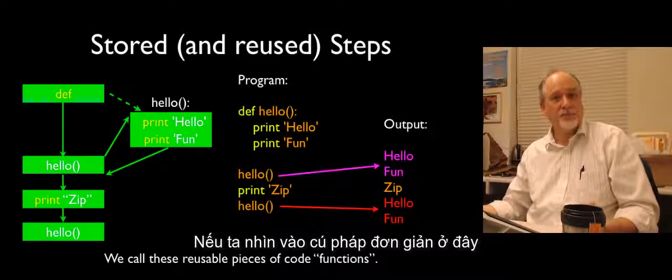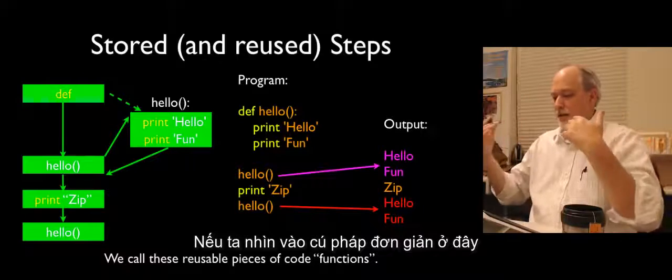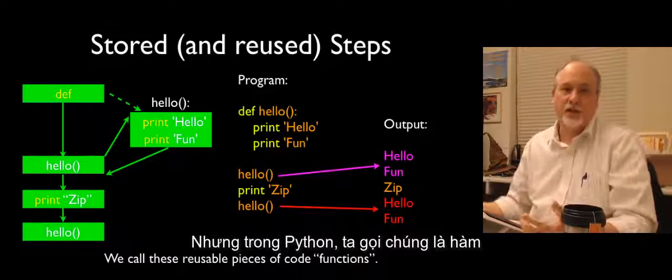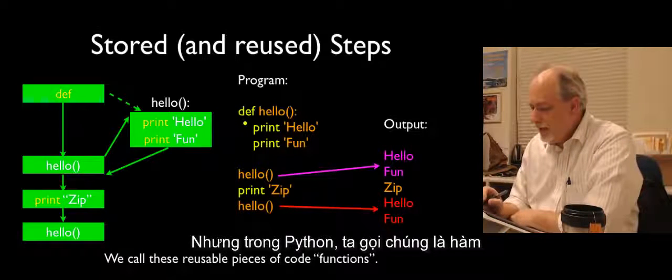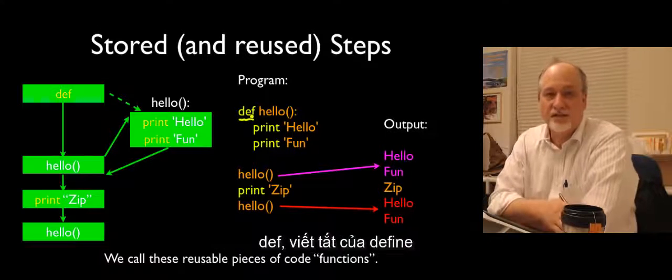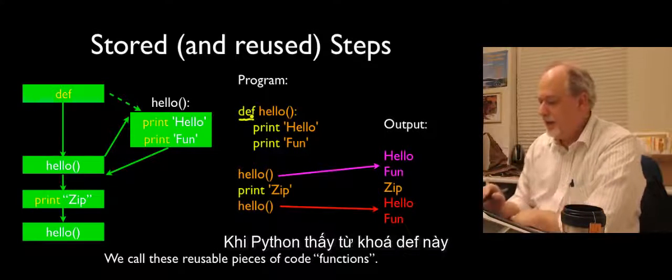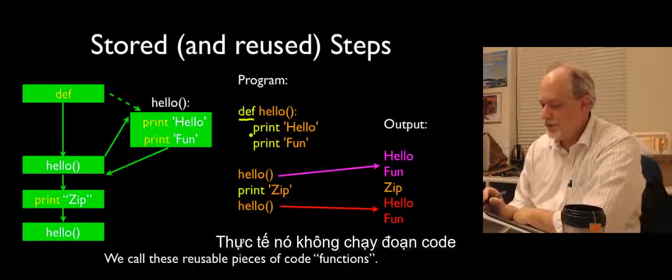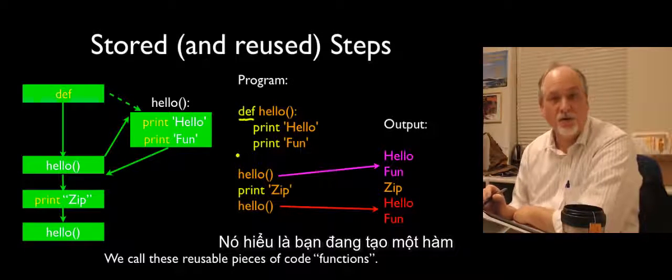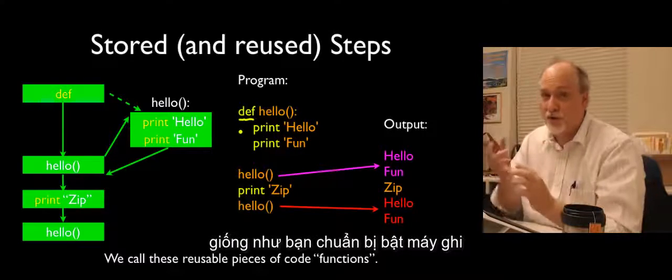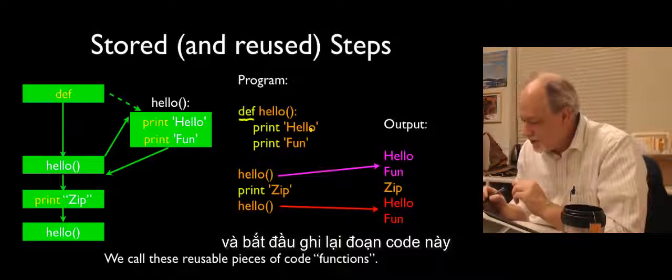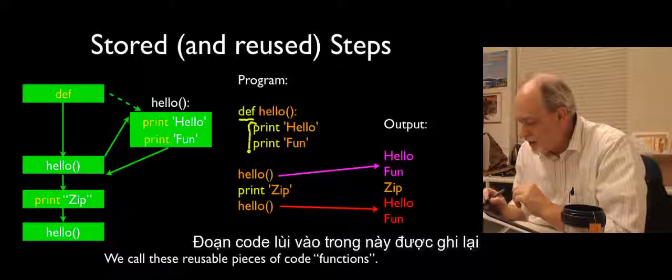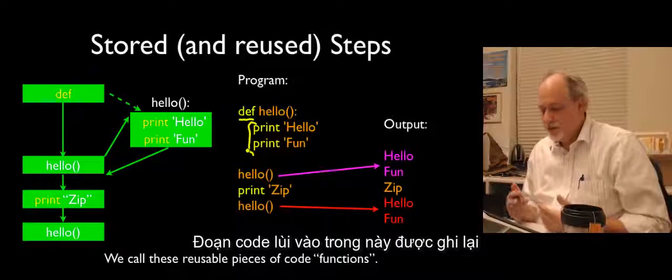So, if we take a look at the simple syntax here, these things are called functions. And some languages are called sub-programs. But we call them functions in Python. And the keyword that we're really going to focus on is def, which stands for define. And what happens here is when Python sees this def keyword, it actually doesn't run the code. It says, oh, you're going to make a function. And you're going to kind of turn on a recorder and start recording this code. So, it has a colon at the end of it. So, it has an indented block afterwards. And so, the intended block becomes recorded.